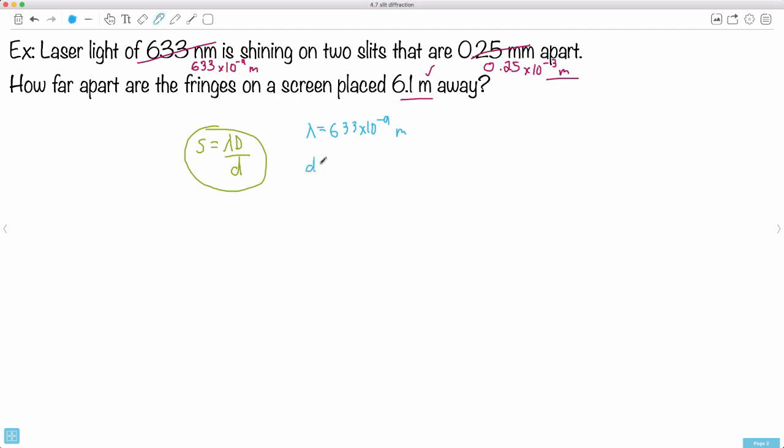This is the slit separation—lowercase d—so that'll be 0.25 times 10 to the minus 3 meters. We have capital D as well, that's 6.1 meters, because that's the distance between the slits and the screen.